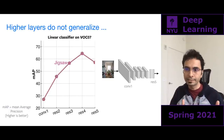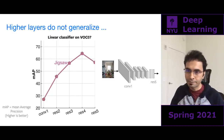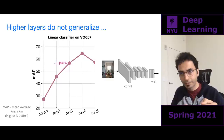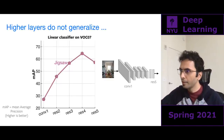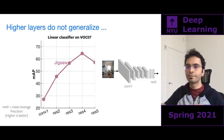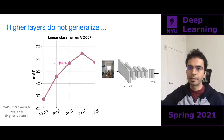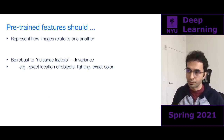In the pre-training stage we were solving something like jigsaw, which has little to do with classification. So the features learned at the last layer became very specific to the jigsaw task and would not transfer well. If this is the problem, what is the solution? Let's take a step back and figure out what pre-trained features should do.